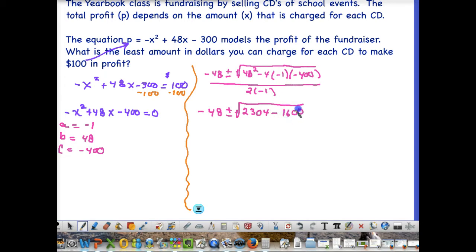And that's going to be all over 2 times negative 1, which is just negative 2, and it's really important to simplify these piece by piece so that you don't mess up the algebra portion. So now we just need to take 2,304 minus 1,600, which gets us 704.